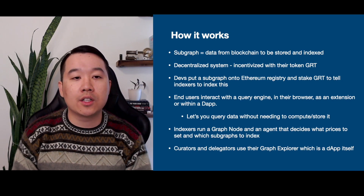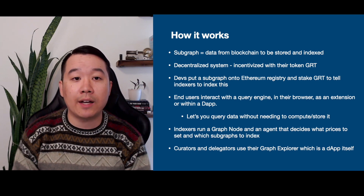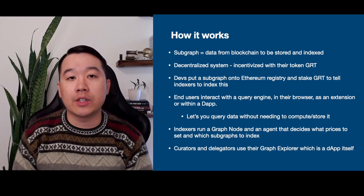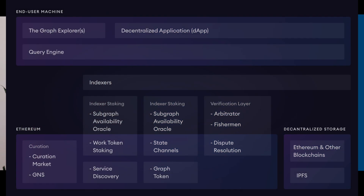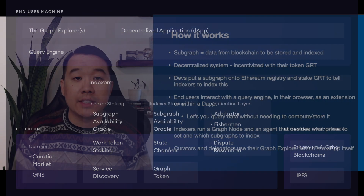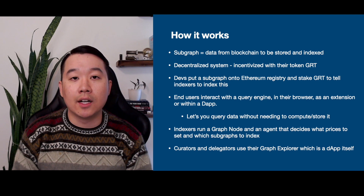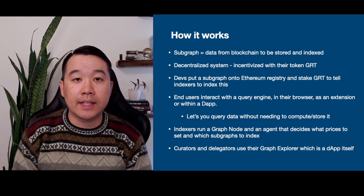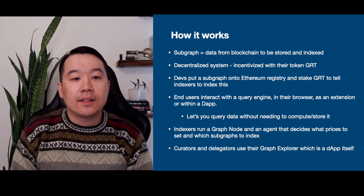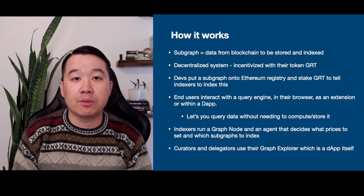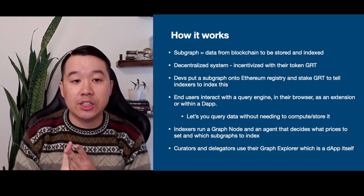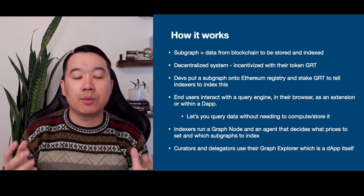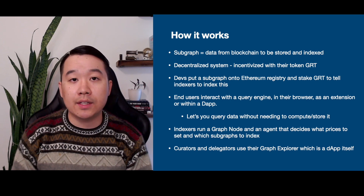How does this all work? The core of the Graph Protocol is something called the subgraph — data from the blockchain stored in a particular manner and indexed. The whole thing the Graph is building is a decentralized system, and incentives are put in place with the GRT token. Developers for a particular dApp can put a subgraph onto the Ethereum registry and stake GRT to tell indexers they want that data indexed. End users interact with a query engine, either in their browser as an extension or within a dApp itself, letting them query data without needing to compute or store it themselves.